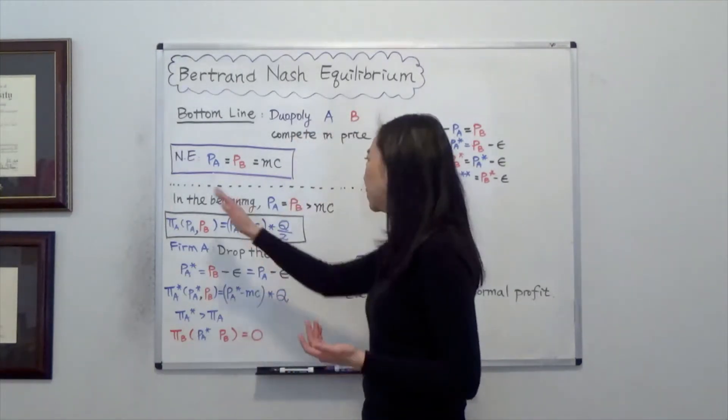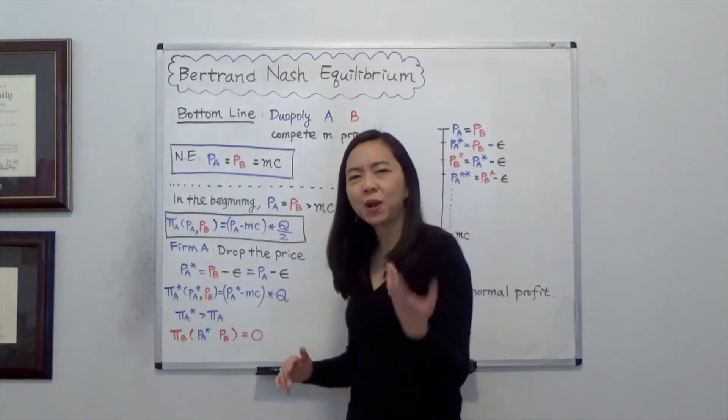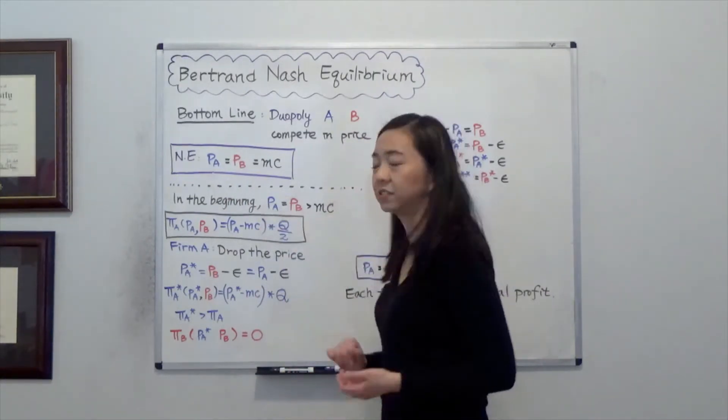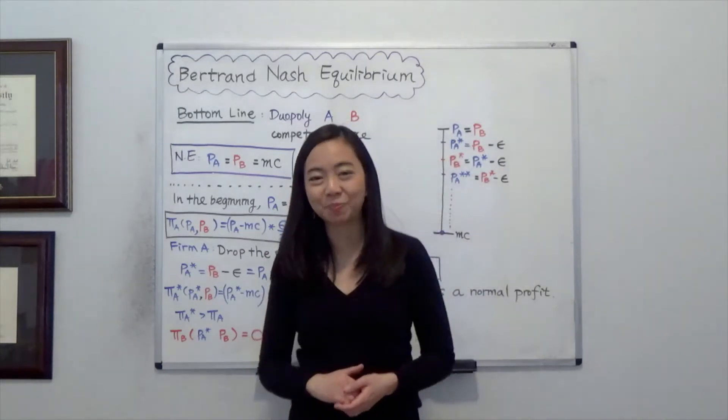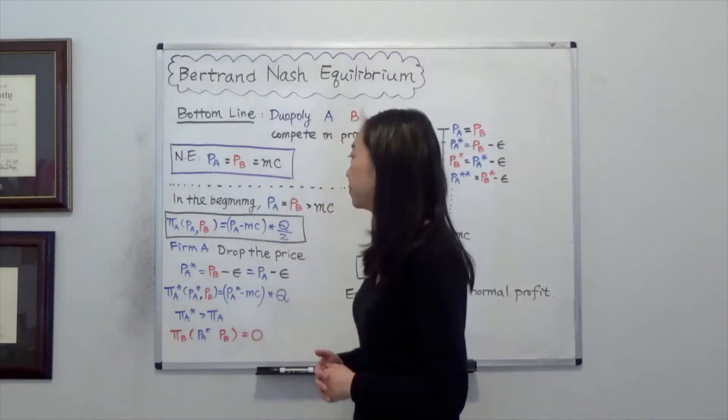So suppose in the beginning we don't have the Nash equilibrium, we have instead PA equals PB and that's greater than the marginal cost. Now let's take a look at the profit of firm A.